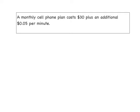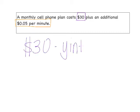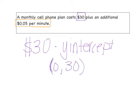So let's say we have a monthly cell phone plan that costs $30 plus an additional five cents per minute. The number that's by itself here is $30 — that's our y-intercept cost. For zero minutes, we're still going to have to pay $30; that's the starting value. And then that five cents per minute is our slope — that's our rate of change. So we start with $30 and then increase by a rate of five cents every minute.